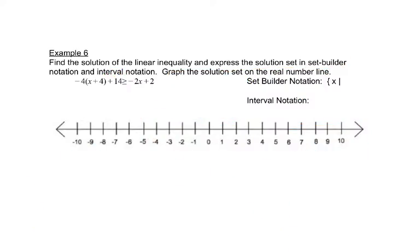Let's look at one more problem. So again, we have parenthesis. We're going to start by distributing. We would have negative 4 times x is negative 4x, and negative 4 times 4 is negative 16. We'll copy plus 14 is greater than or equal to negative 2x plus 2.